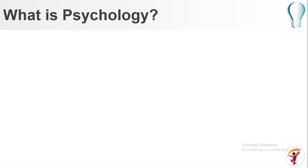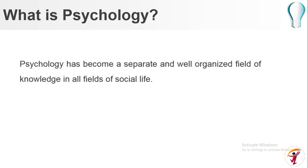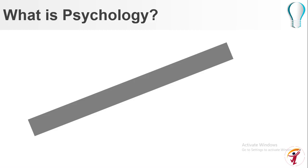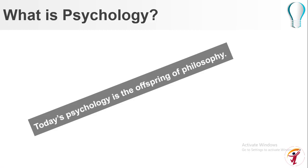Let us discuss: what is psychology? In Gujarati or Hindi we call it Mano Vigyan. If we separate the two words, Mano Vigyan, it means 'man ka Vigyan' — the study of the mind. Psychology has become a separate and well-organized field of knowledge in all fields of social life. Previously, to study human behavior and mind, there was a separate subject known as mental philosophy. Today's psychology is the offspring of this mental philosophy.